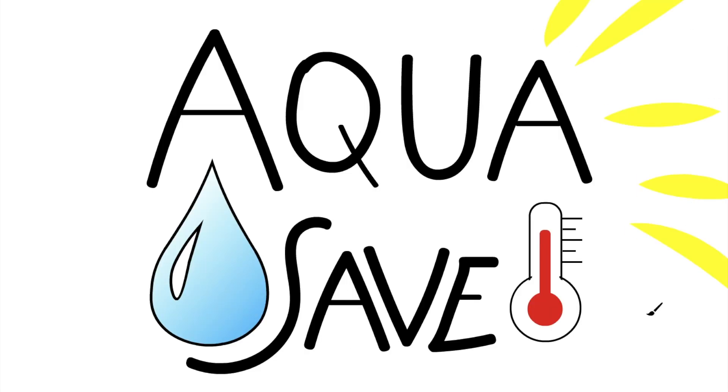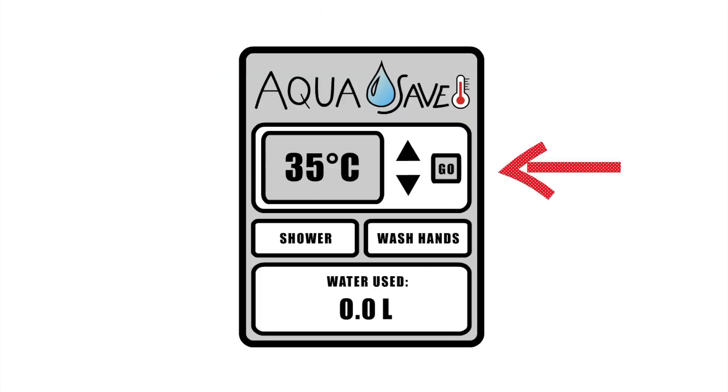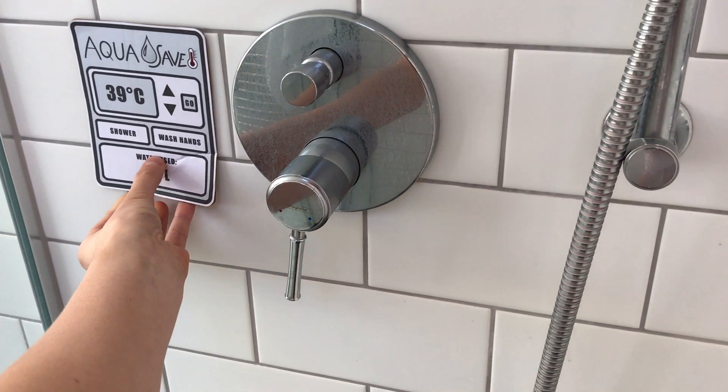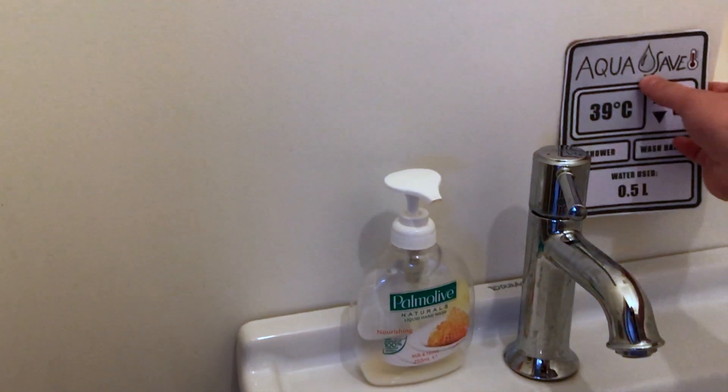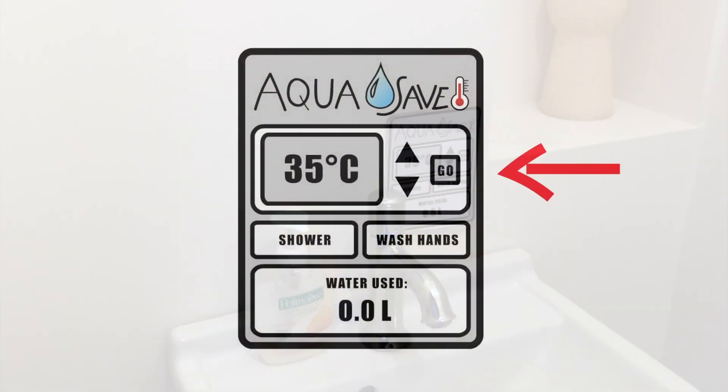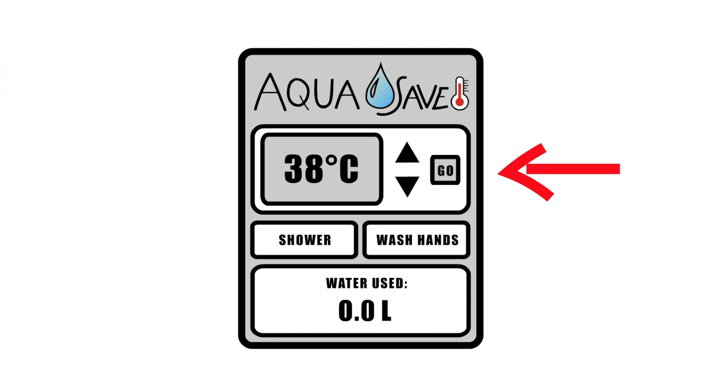Our solution: Aquasave. Aquasave has three main features. You can choose the temperature of the water you want to use. It shows how much water you're using as you use it and will also calculate your monthly water bill. The Aquasave electronic screen will be placed next to your household taps, allowing you to easily set the temperature of water you want or choose from your own preset temperatures.